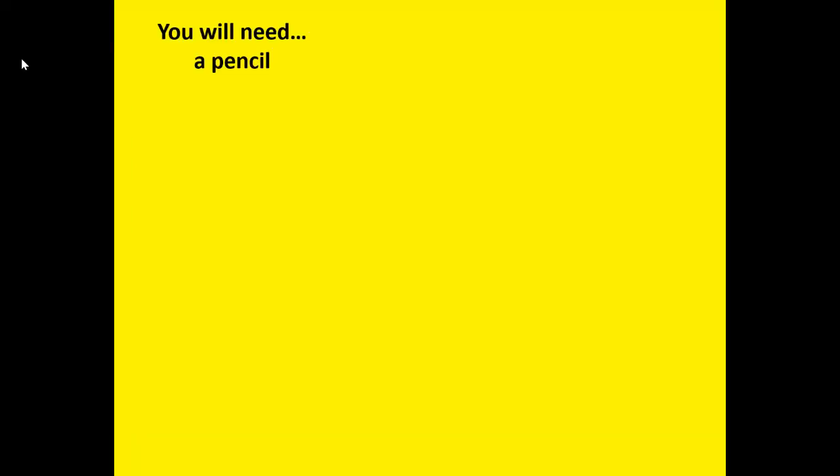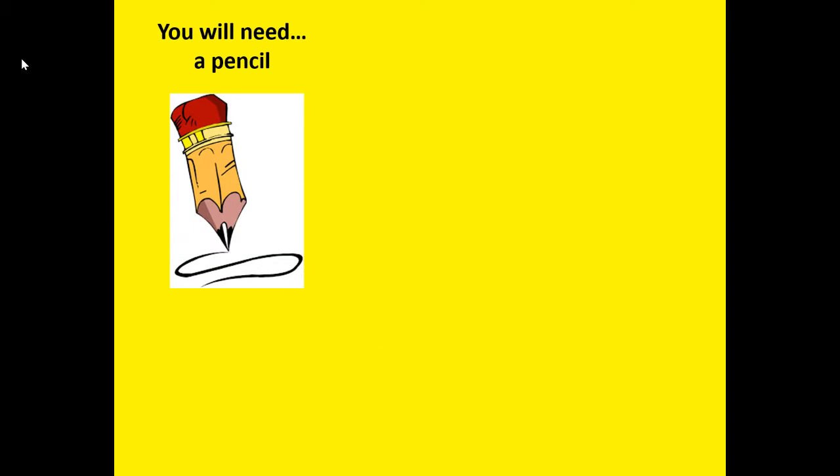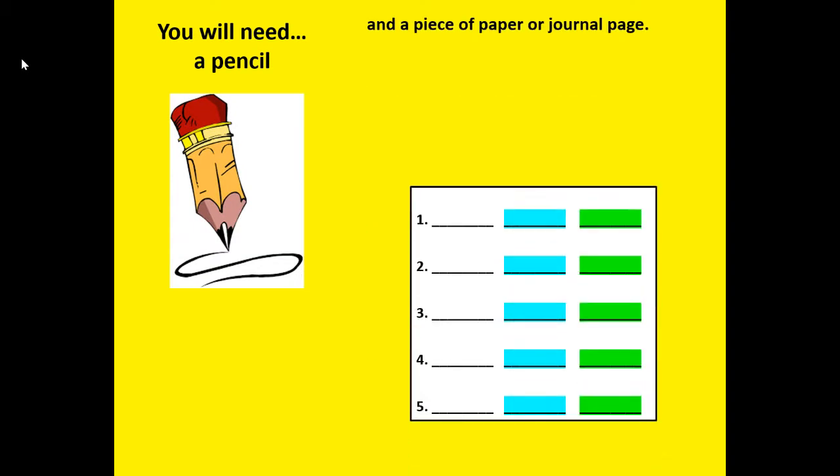For this lesson, you will need a pencil and a piece of paper or journal page. And whenever you see a pencil on the slide, that means you are going to write a new vocabulary word or phrase.